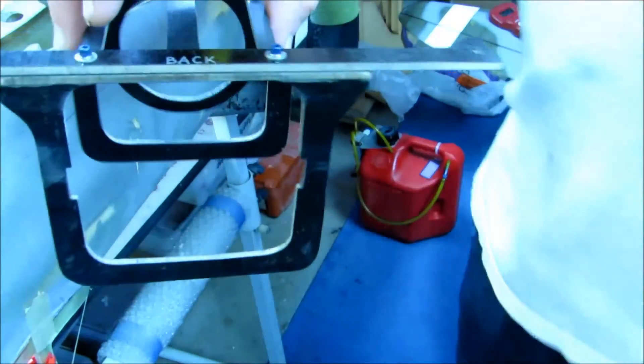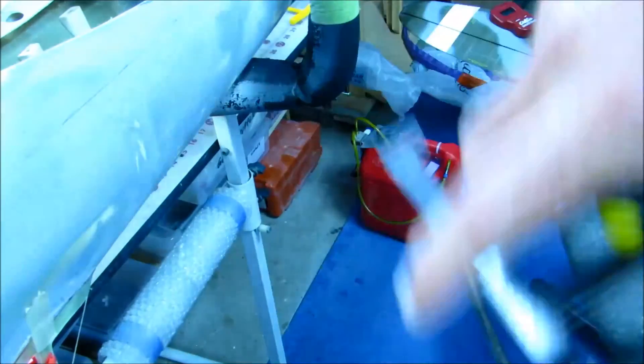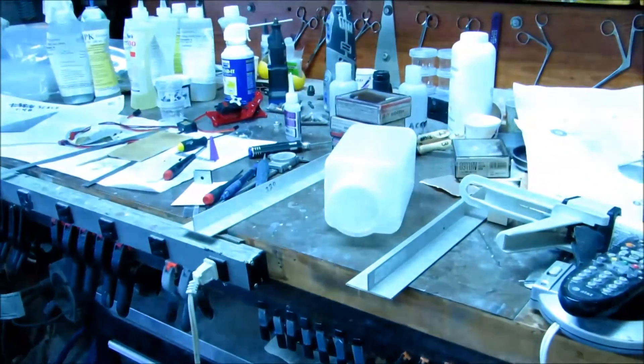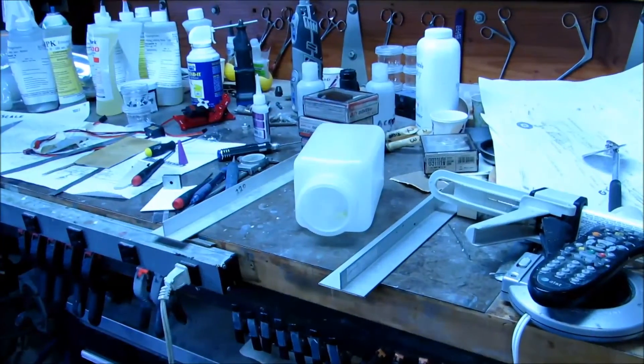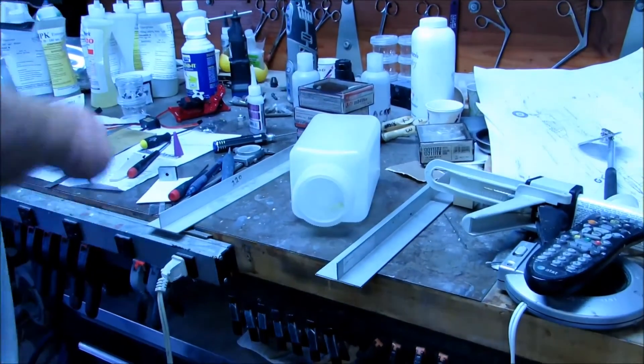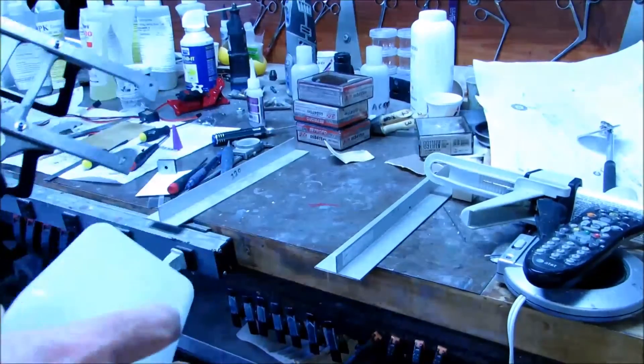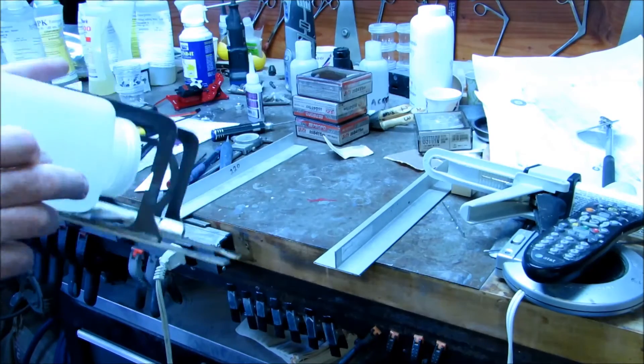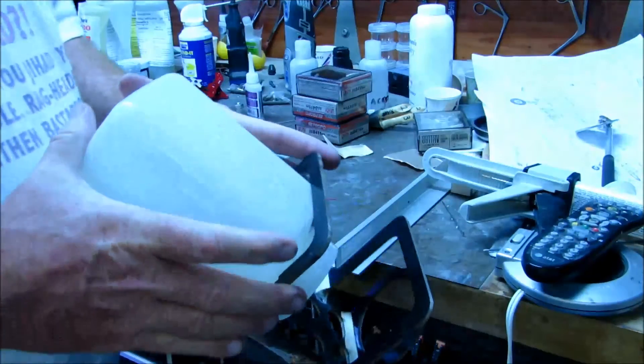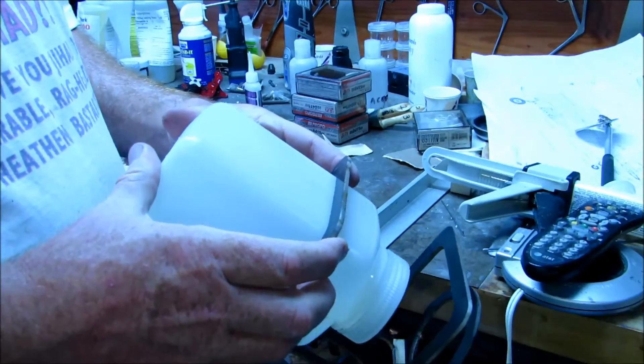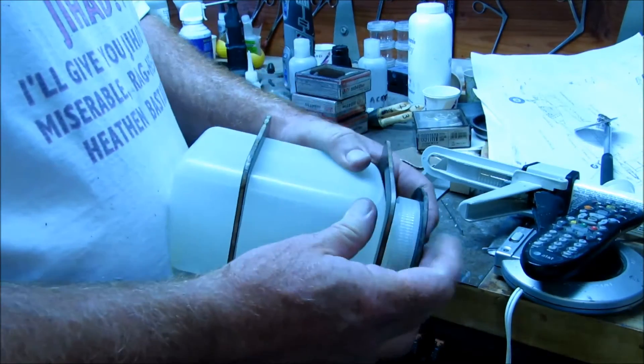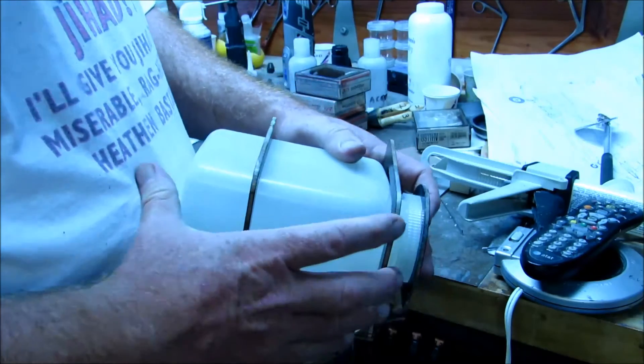And so with a 32 ounce gas tank, like that one, figure it weighs about 2 pounds, probably a little less because fuel is lighter than water. But figure about 2 pounds. 10 G's means that this whole mess has to be able to hold 20 pounds.